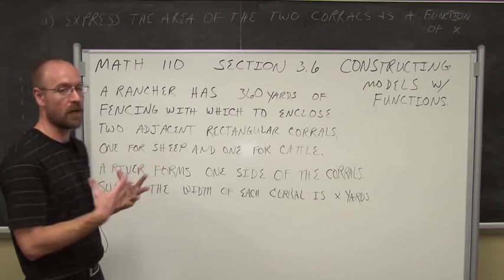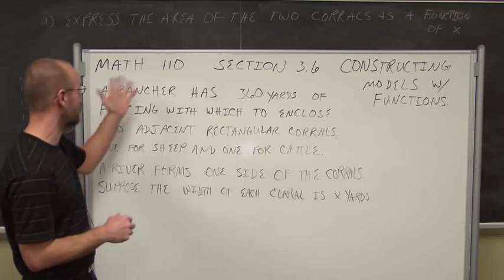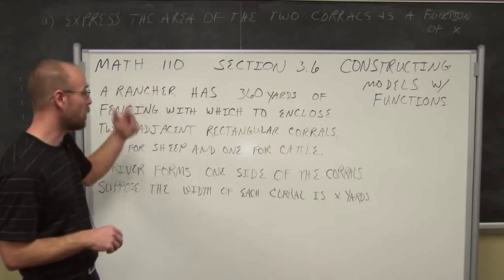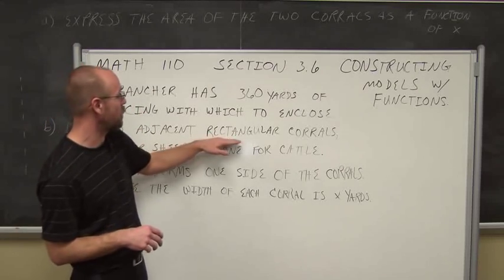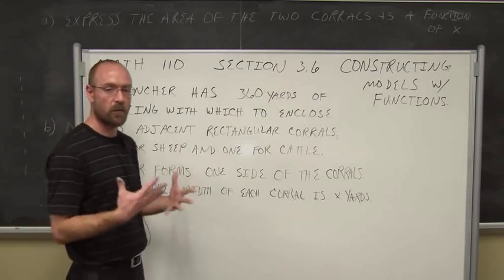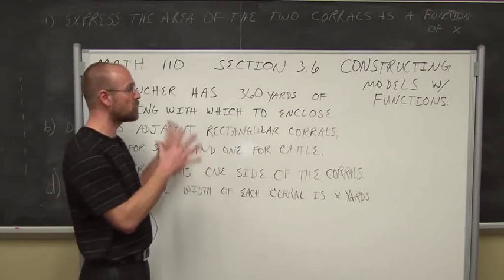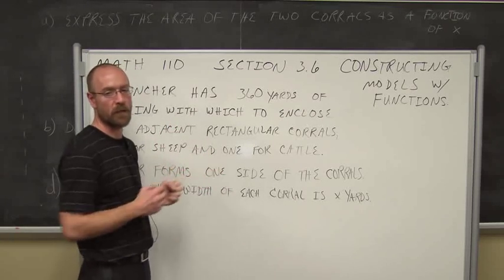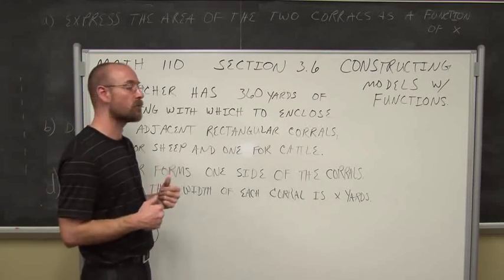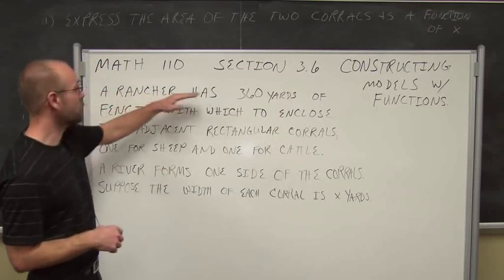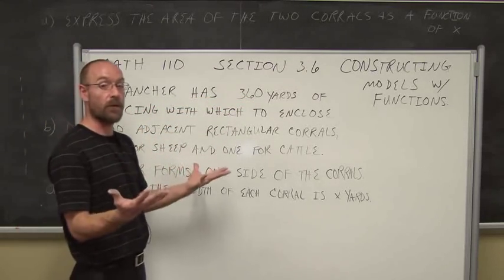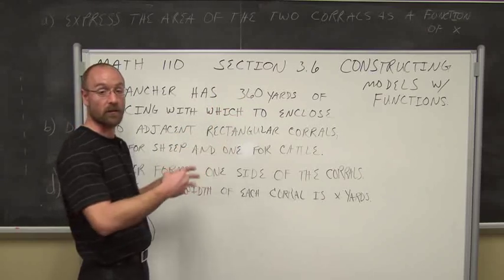Now that we've read it, do I understand the words that are being used? I know what a rancher does, I know all about fencing, I know what rectangular means. We have sheep and cattle. So basically, we read it the first time just to make sure we understand the information that's being communicated. The second time I read it, I want to determine what's the given information. A rancher has 360 yards of fencing, so that's all the fencing he has - 360 linear yards.